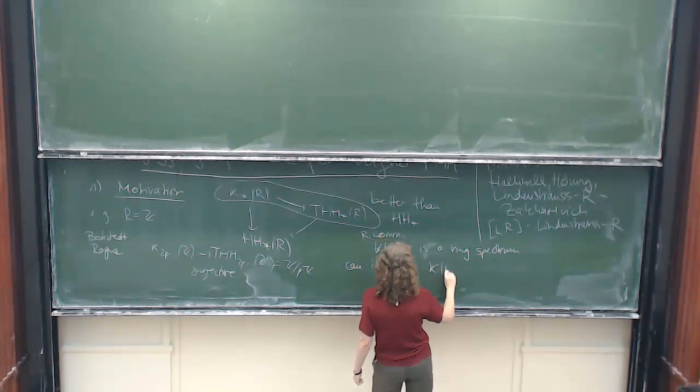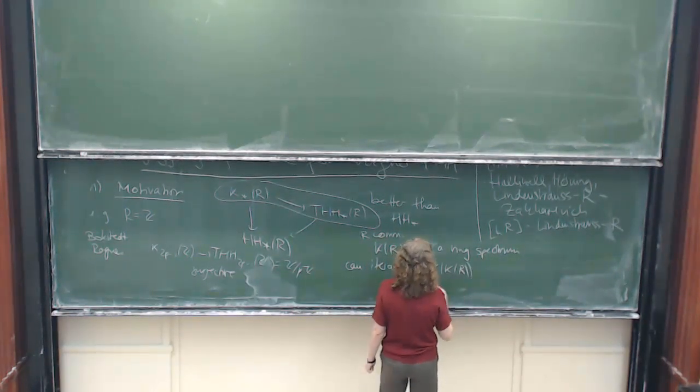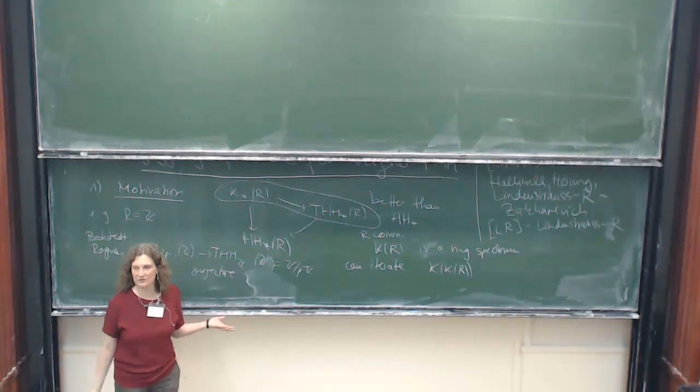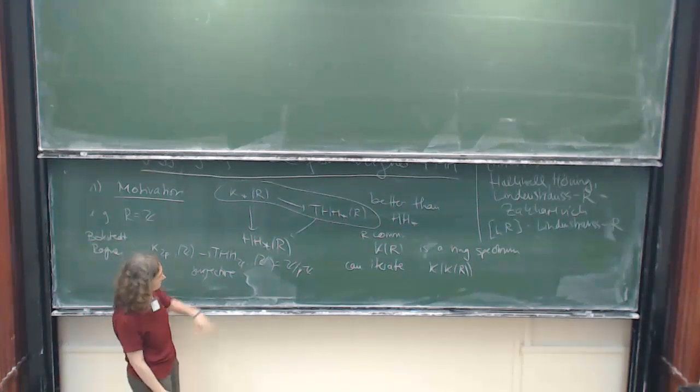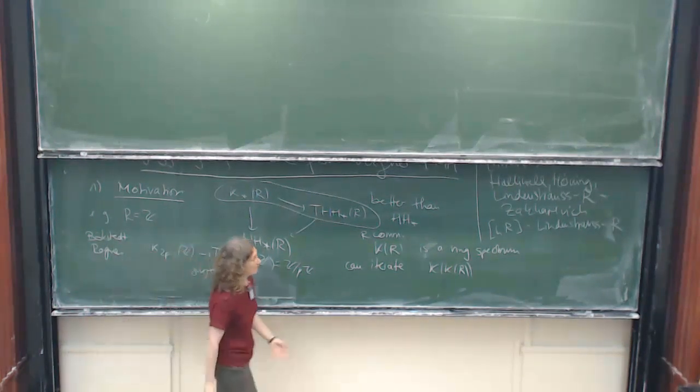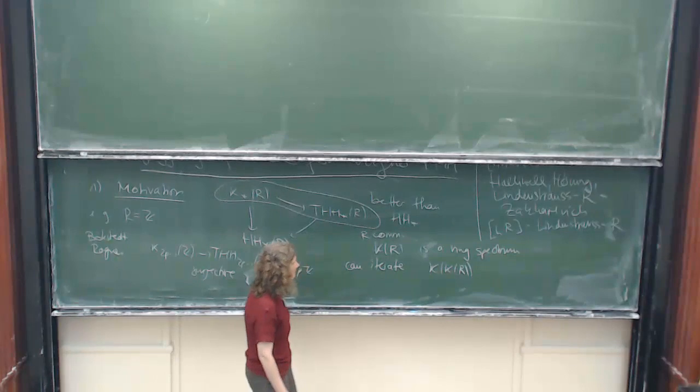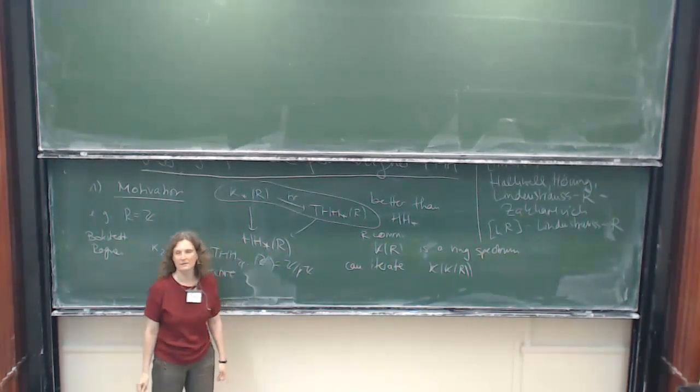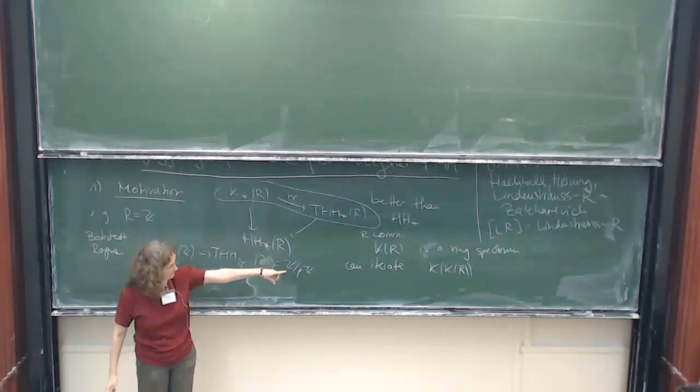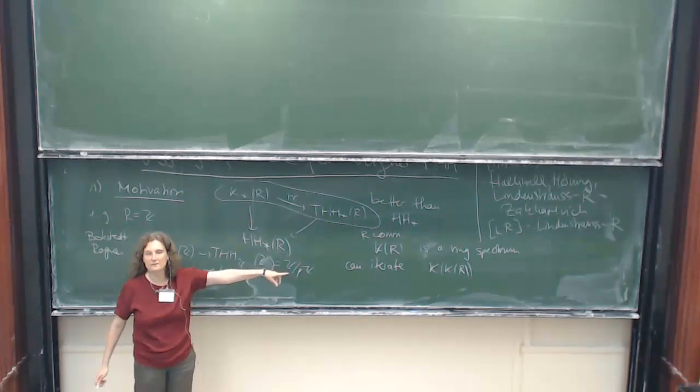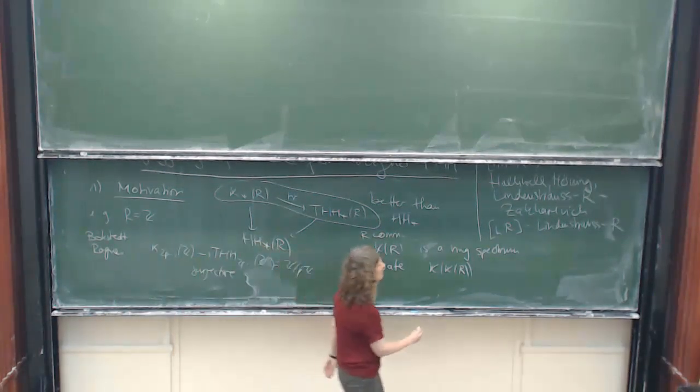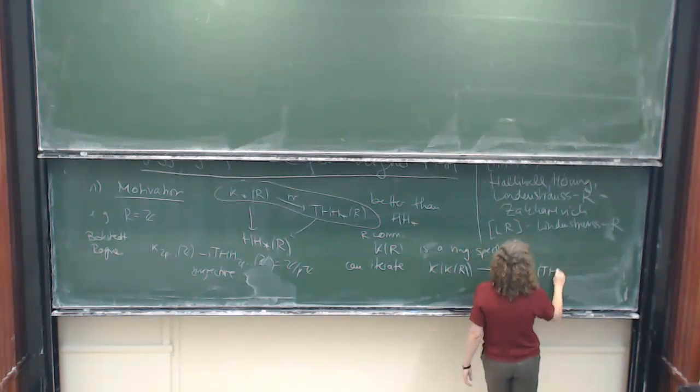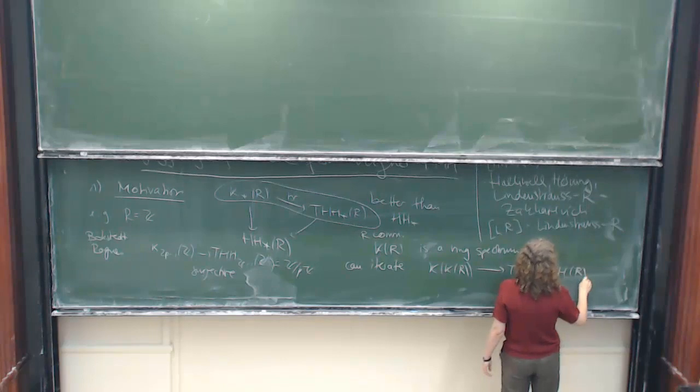So you can form K of K of R. Well, you can form it, so why should you do this? I'll tell you about this later, this doesn't fit in here. But if you write this down, this trace here has nice properties, so you can apply it inside and outside of this K-factor, so you get a map to iterated topological Hochschild homology of R.